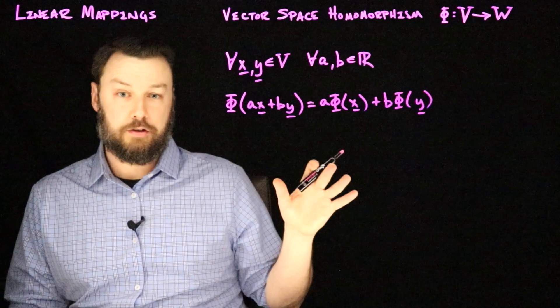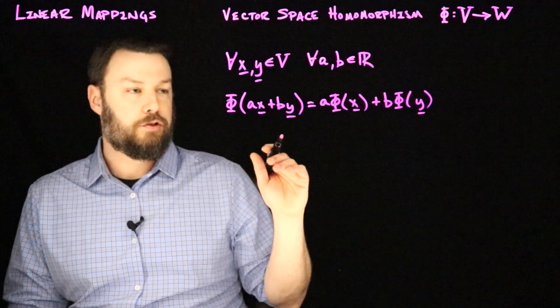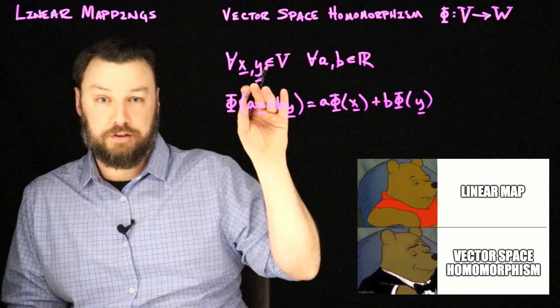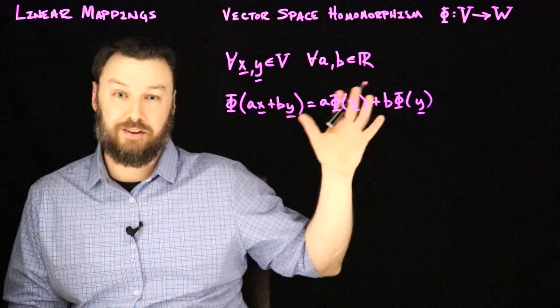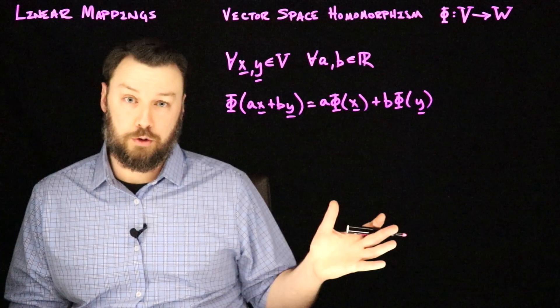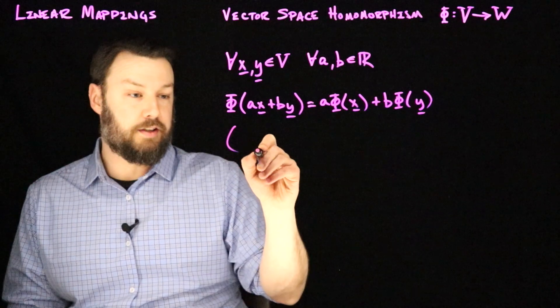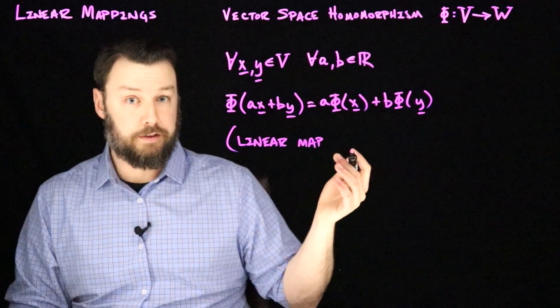Calling this a vector space homomorphism is a kind of a fancy and let's say precise way to say that this is a linear map. That is to say that if I apply the map to the sum of two things, then I could apply the map separately to each of them and add them together and I would get the same result and that this is also true for scaling. So this is a way that we might say that this is a linear map from V to W.